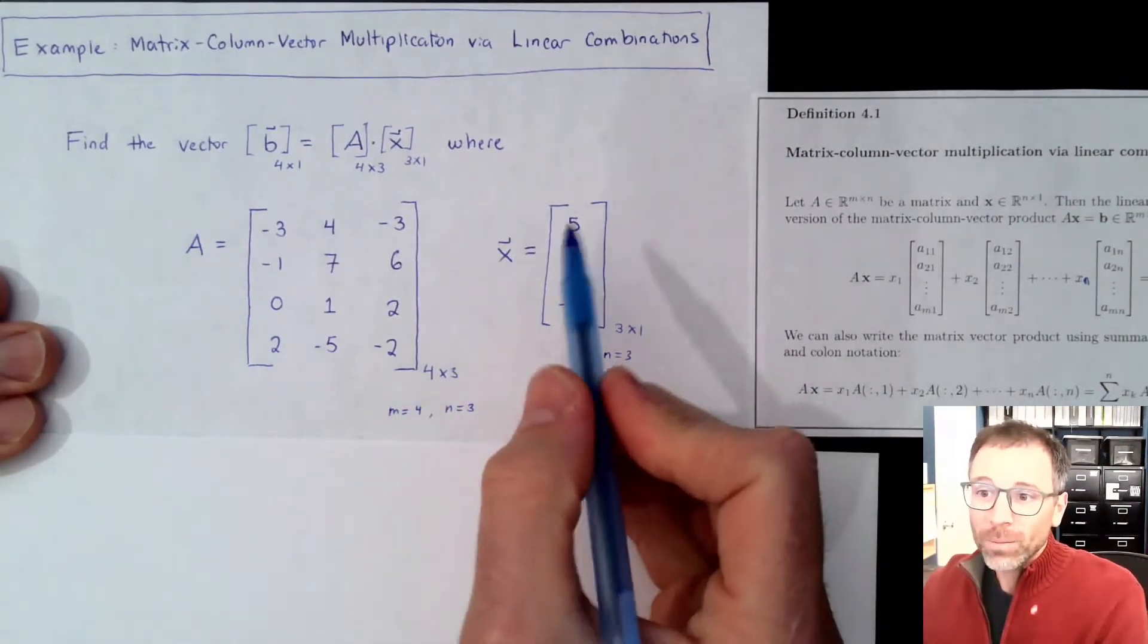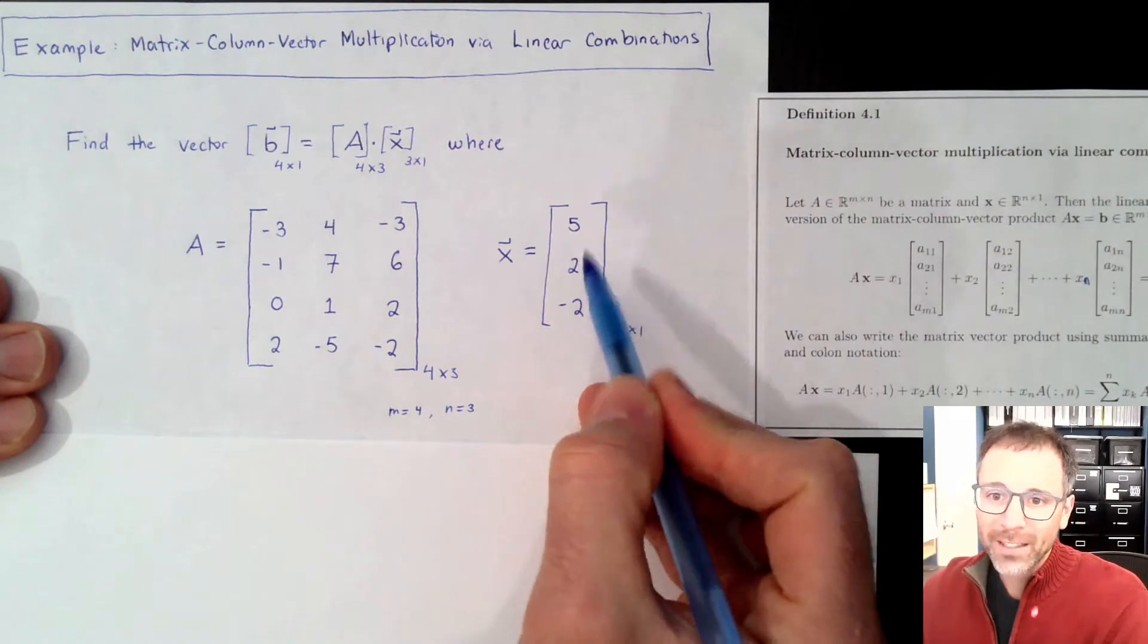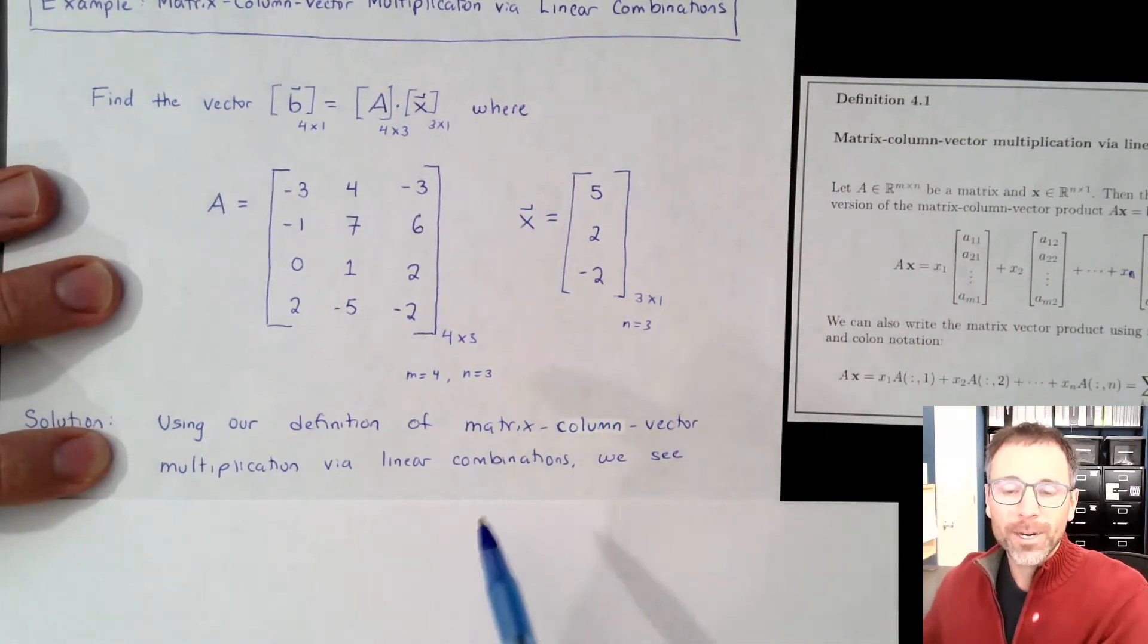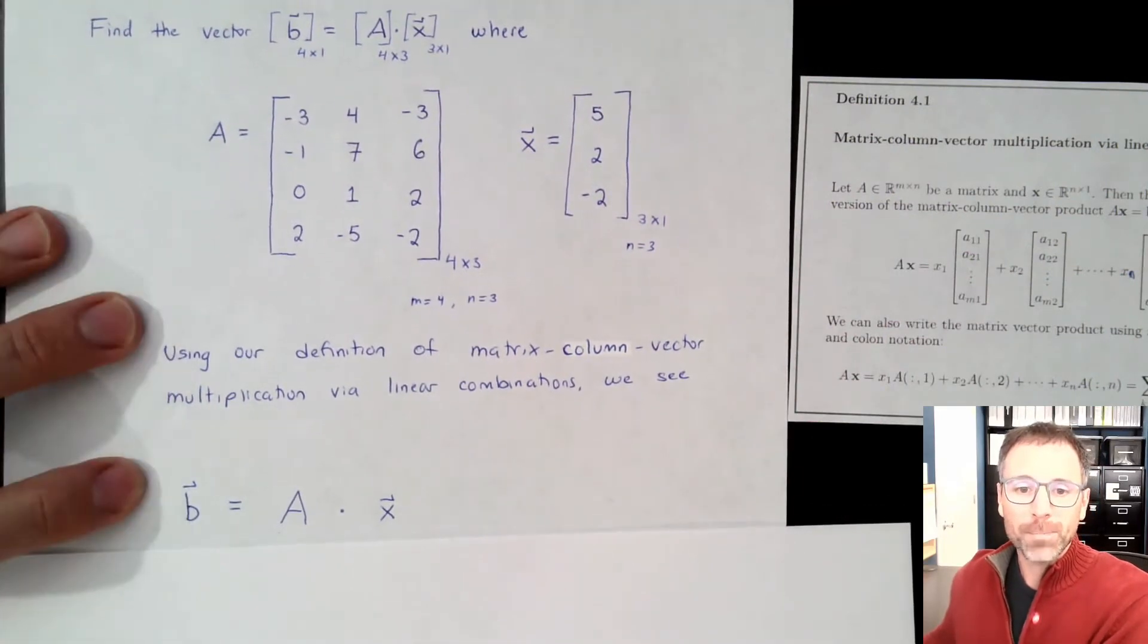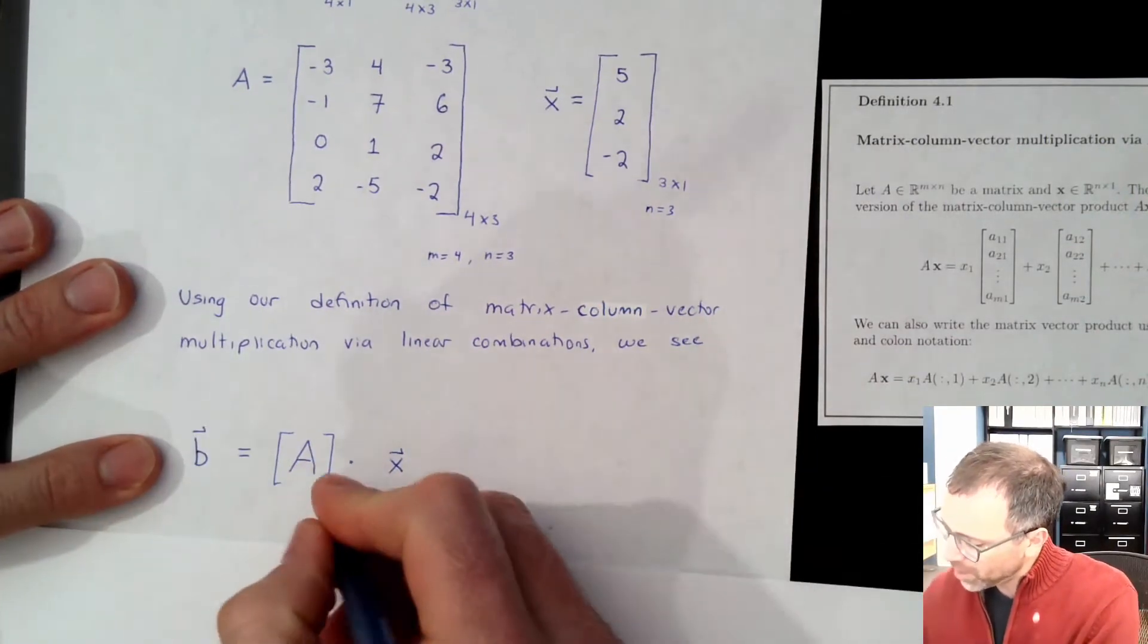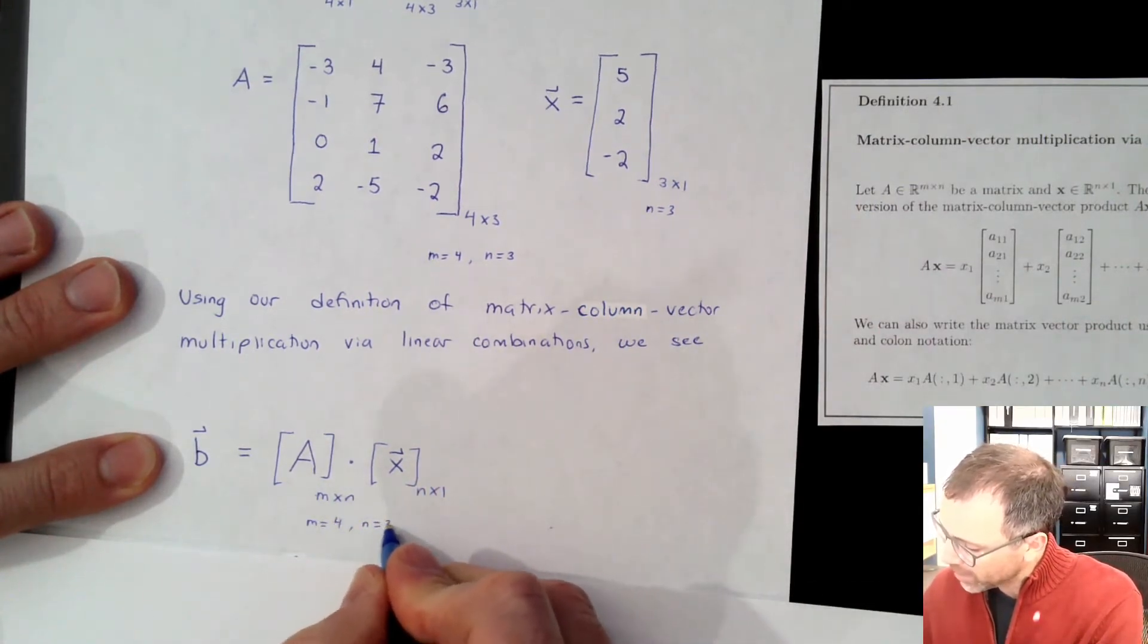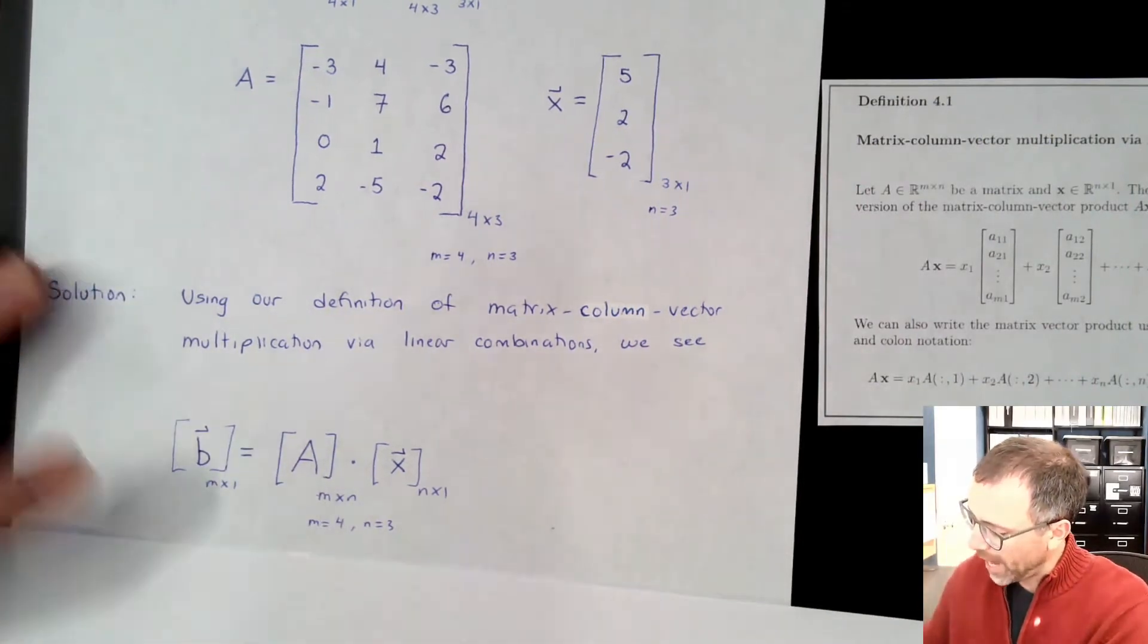So here, the columns of A, we actually have individual values of them, and then the entries of x, the same thing. So let's go ahead and use that definition to produce here. So using our linear combination version of the matrix-column-vector-multiplication operation, we see b is equal to A times x. Let's go ahead and analyze these again. We know that this is going to be an m by n. This thing is going to be an n by 1. In this case, we know that m is 4, n is 3. And then in this situation, this would be an m by 1, since the outer dimensions hold that.